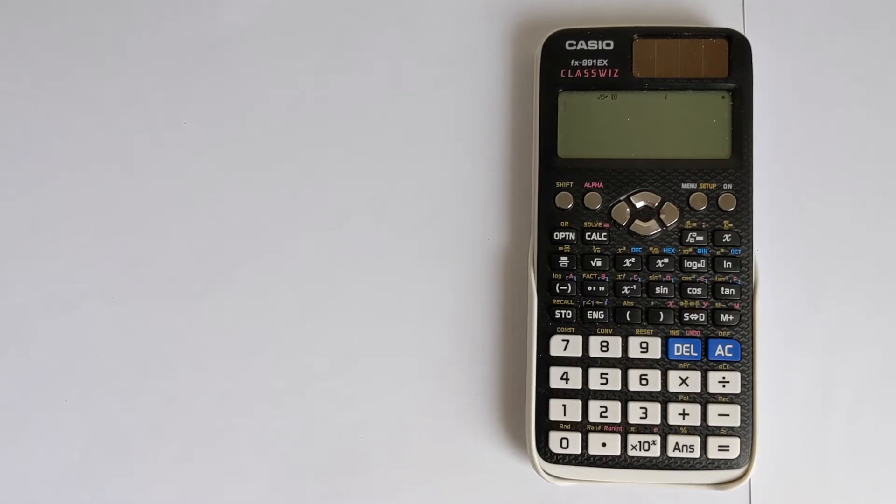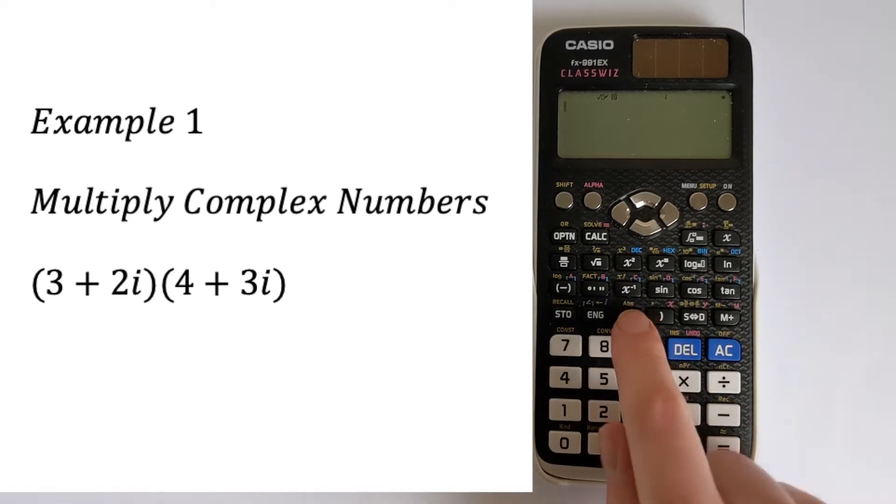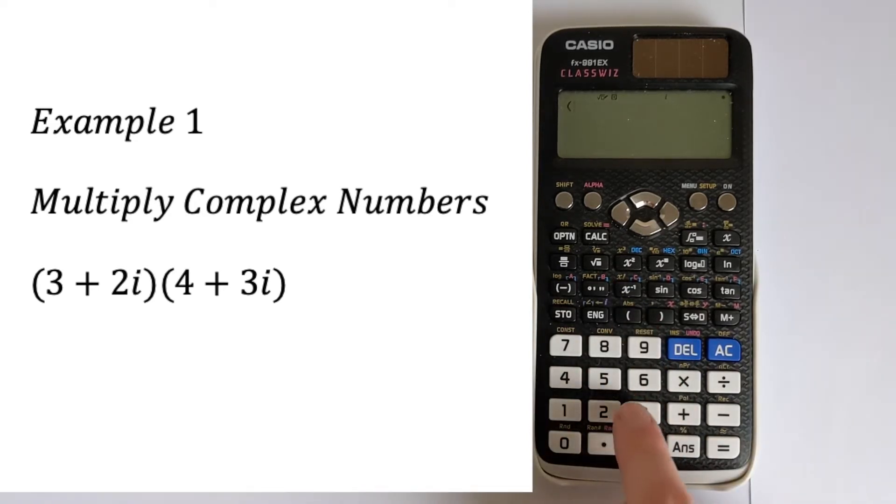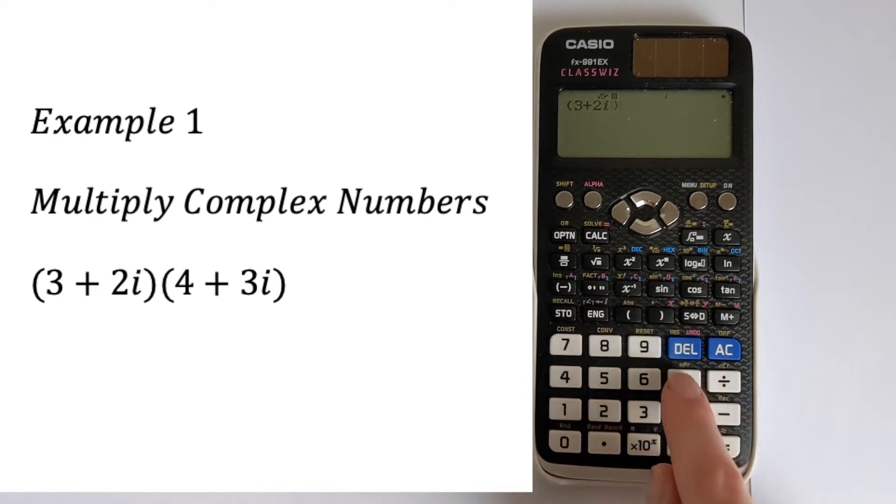Let's do an example of something the calculator can do. We're going to multiply two complex numbers together: 3 plus 2i multiplied by 4 plus 3i. To do that, start with a bracket, then 3 plus 2, and then i is on this ENG button. Close the brackets,